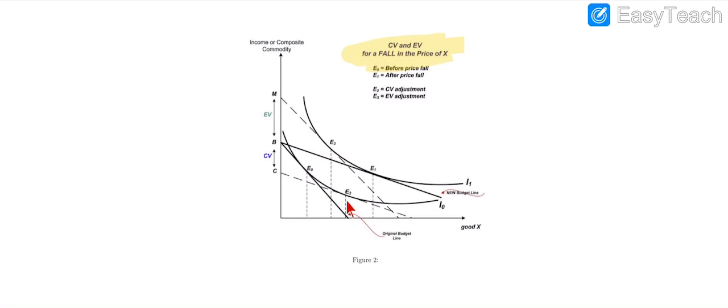This is point C. The shift to the new budget line has distance between BC, which is the compensating variation.